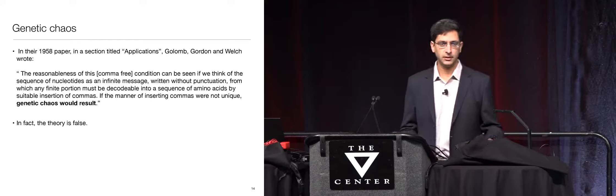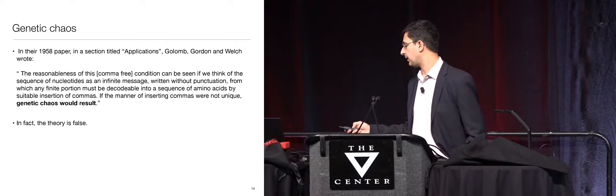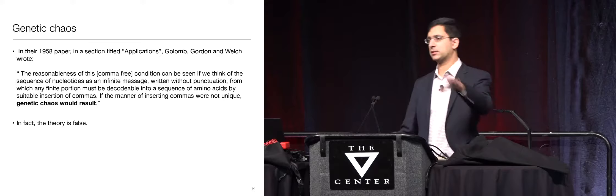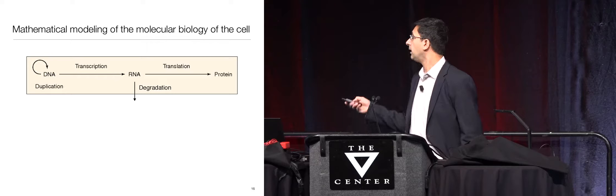Biology turns out to be extremely complicated. This code was worked out a few years later by someone called Marshall Nirenberg, who won the Nobel Prize for it in the 1960s. So with all the great minds in the RNA Tie Club — 20 members and four honorees — they didn't get it.